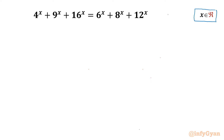Let's get started by writing one exponent property or law. It is: (a^b)^c can be written as (a^c)^b, and further we can write it as a^(b·c).